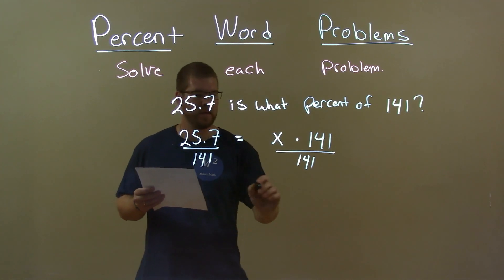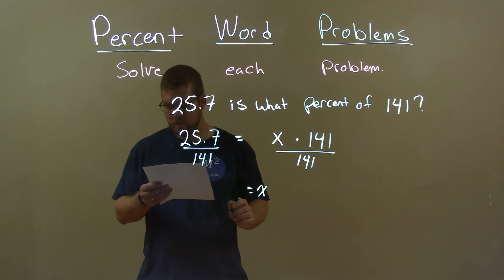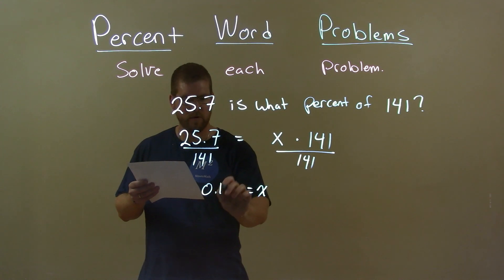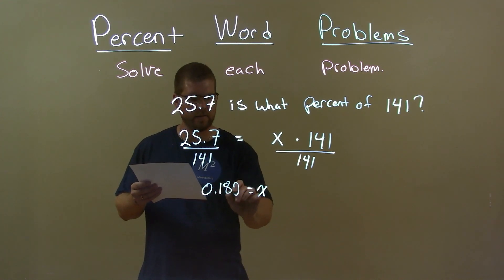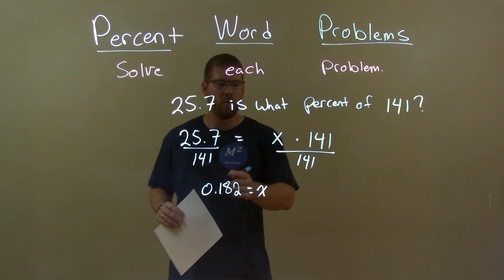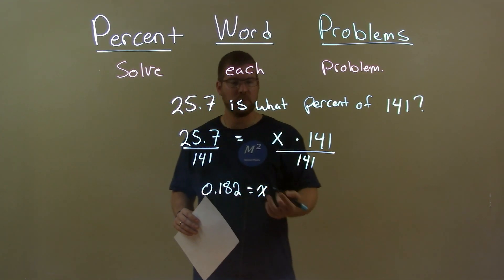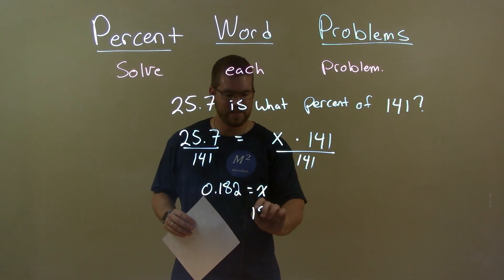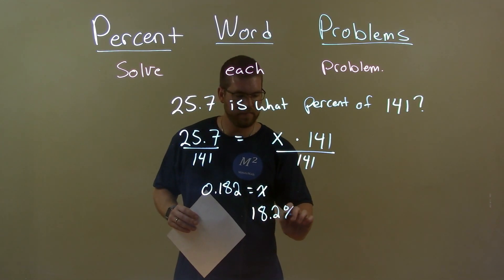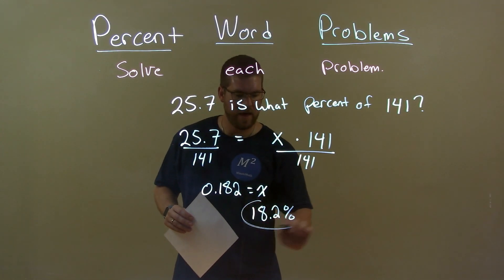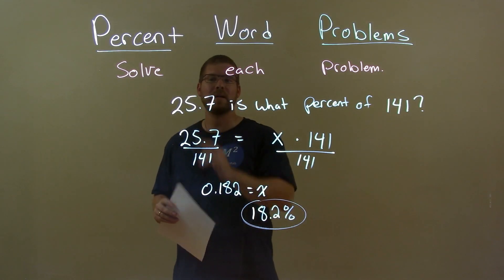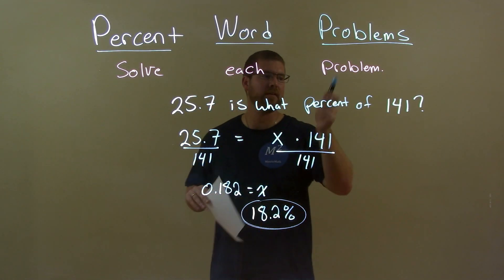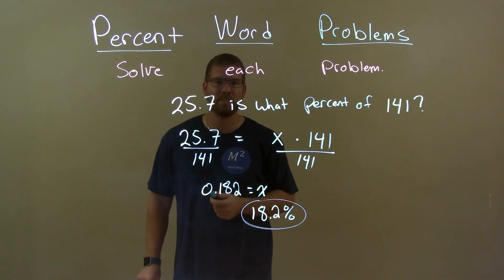And that gives me an x value that's equal to 0.182. Well, we can convert that to be a percent, because that's what we're looking for, and that's 18.2 percent. And so, that is my final answer. 25.7 is 18.2 percent of 141.